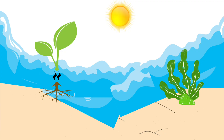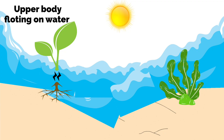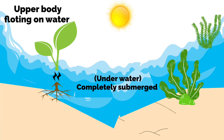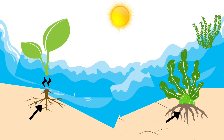Some plants have their upper parts floating on the water while others are completely submerged — that is, they are underwater. There are also some plants which are not rooted in the soil but instead float freely on the water.